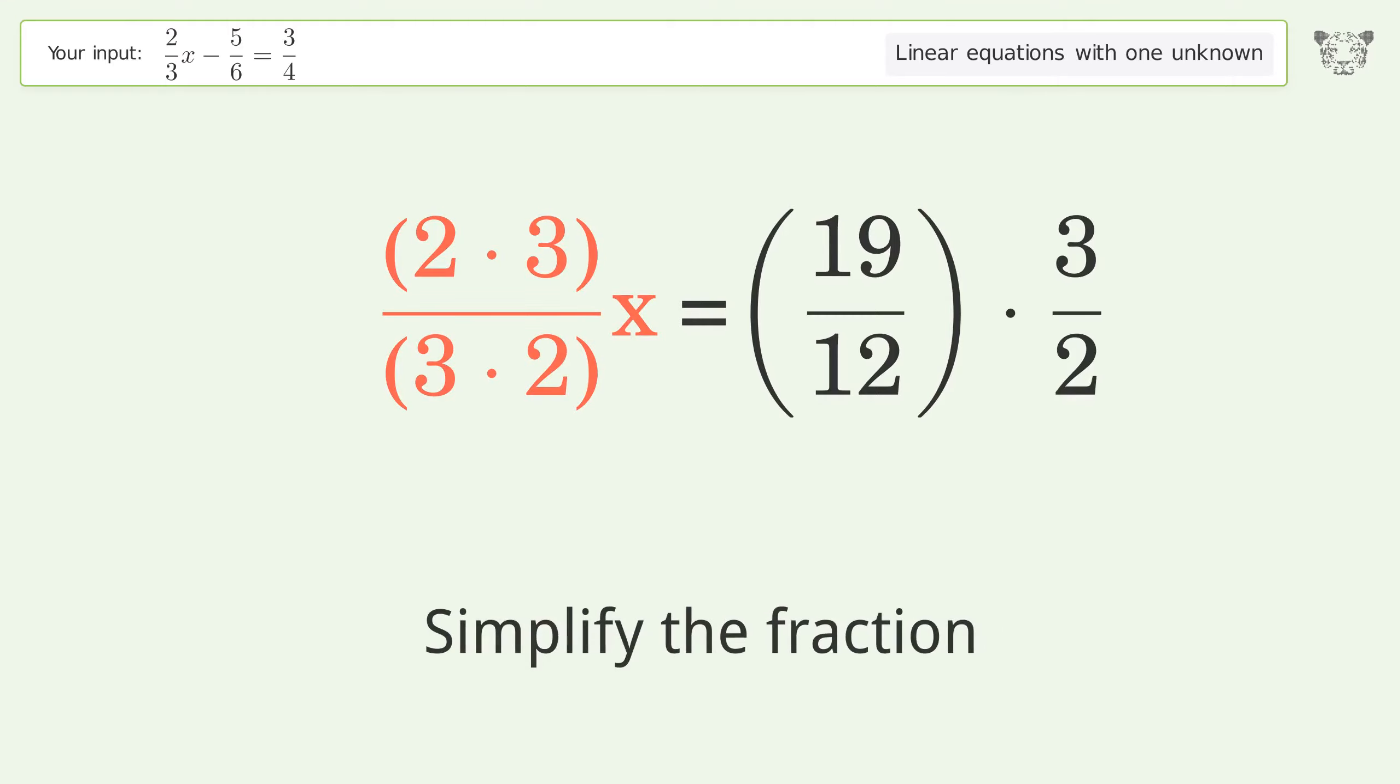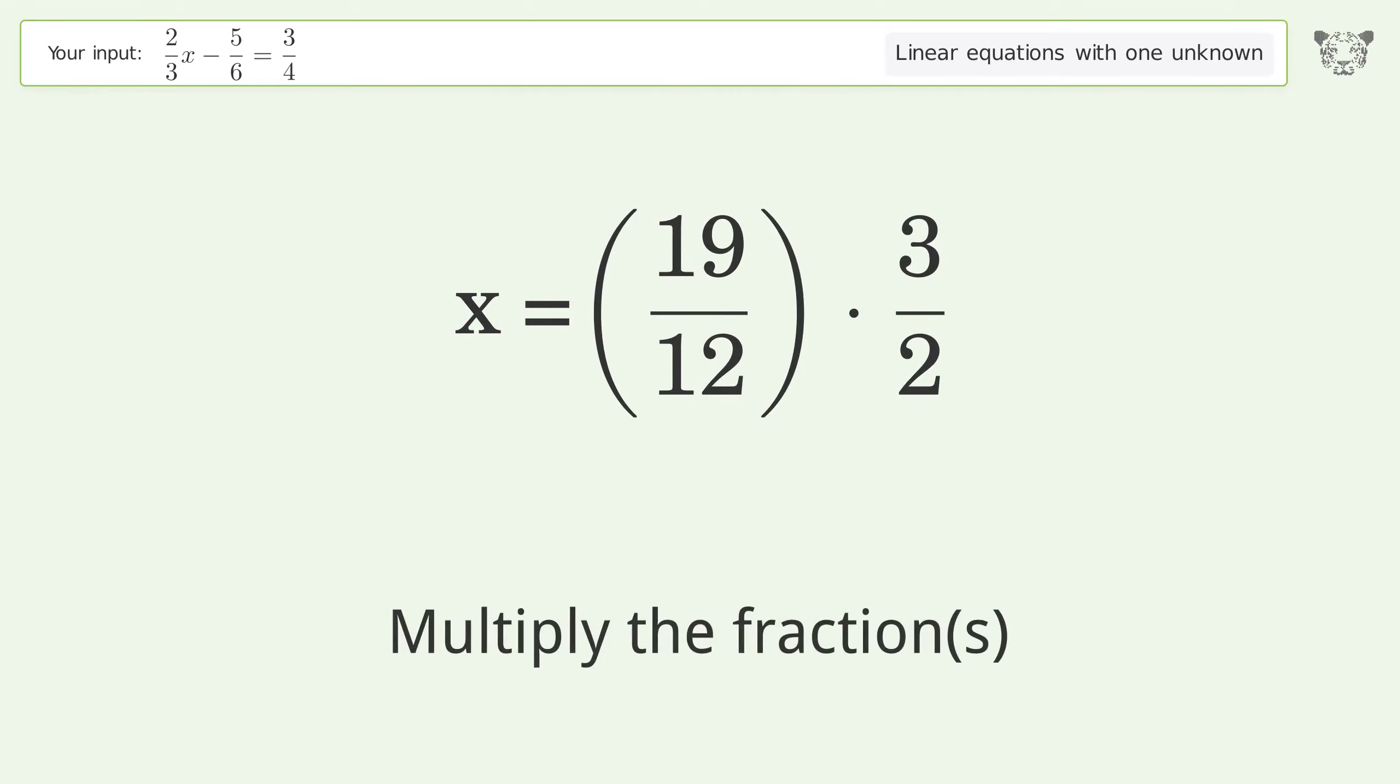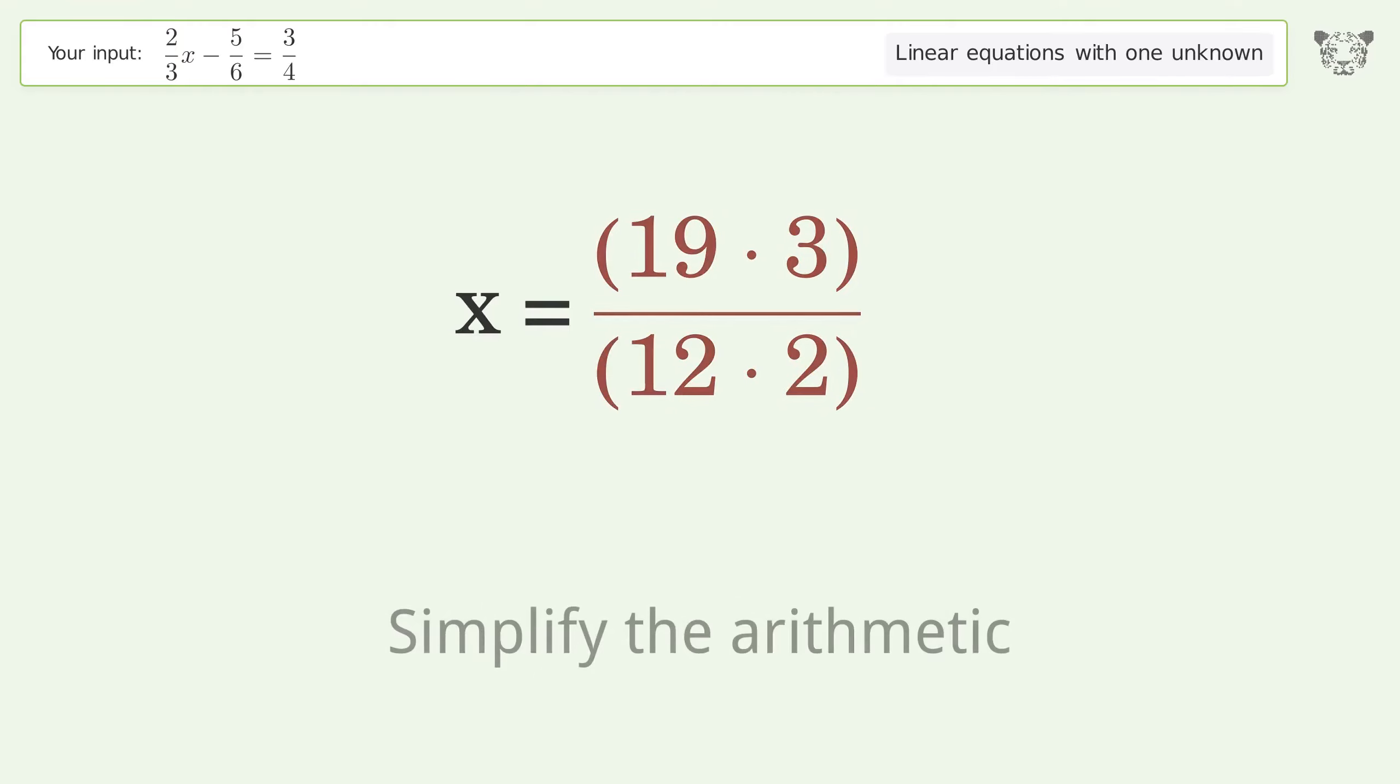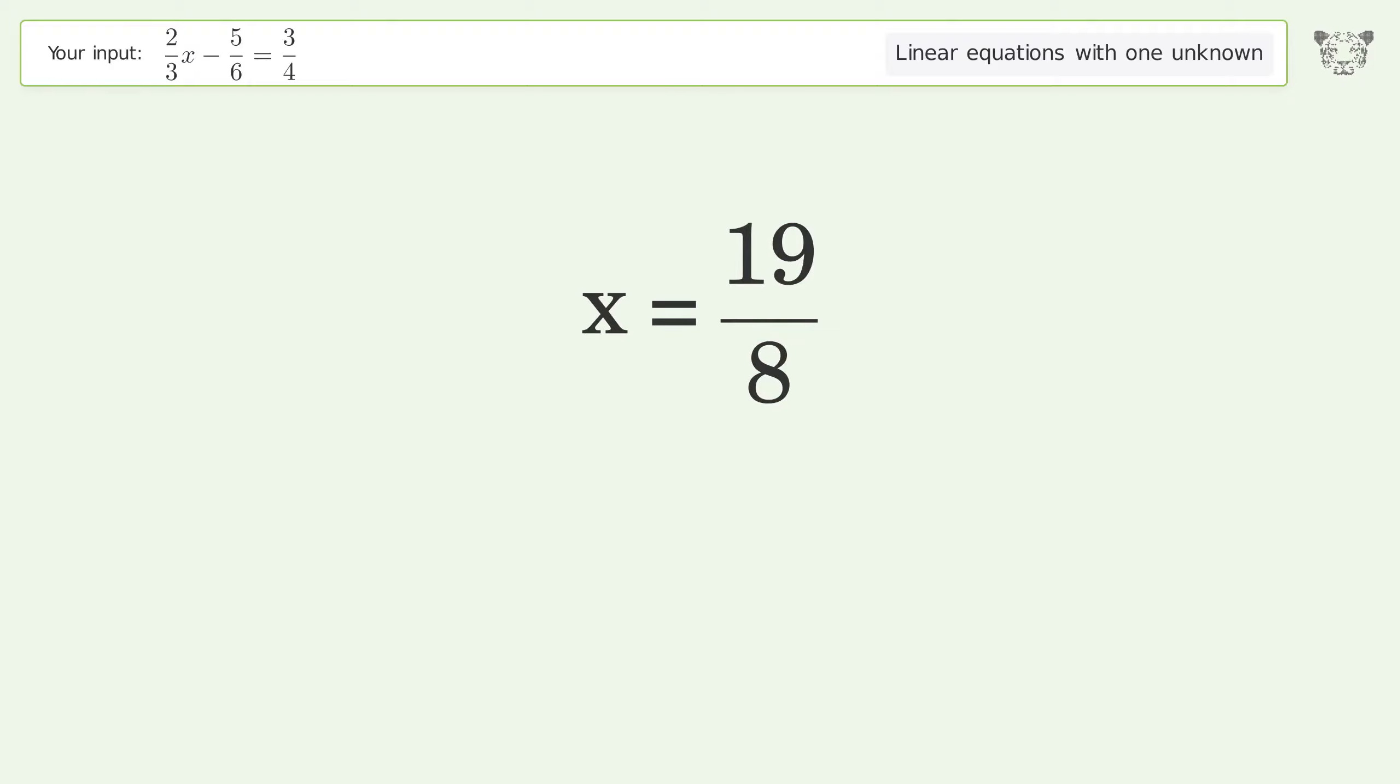Simplify the fractions. Multiply the fractions. Simplify the arithmetic. And so the final result is x equals 19 over 8.